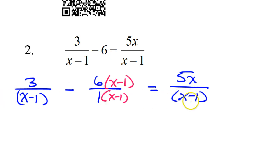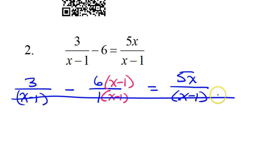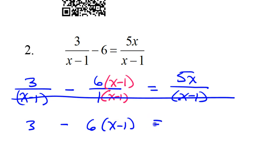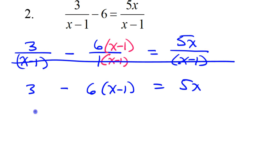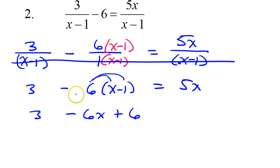Now my denominators are all the same. If the denominators are the same, then the numerators must all be equal — it's like canceling out the denominators, ignore all the denominators. So that's going to give you — watch out for this negative sign — 3 minus 6 times x minus 1 is equal to 5x. I have 3, and this is a negative 6, so when I do the distributive property, I'm distributing a negative 6. So this will be negative 6x plus 6. Negative 6 times negative 1 is a positive 6 — that's the most common mistake people make.